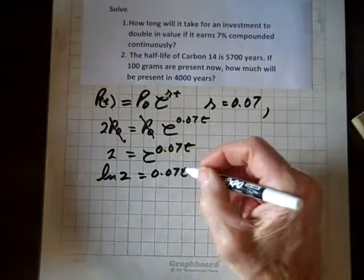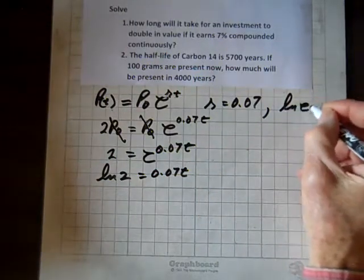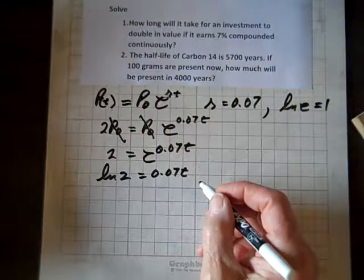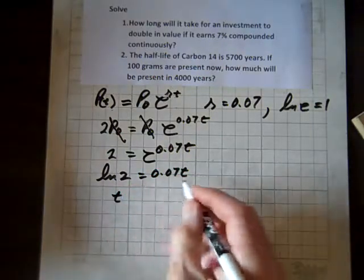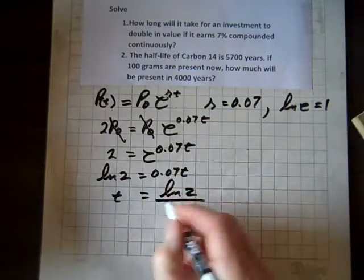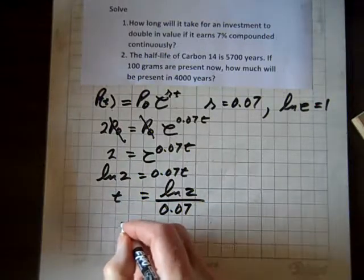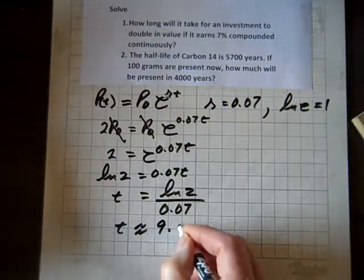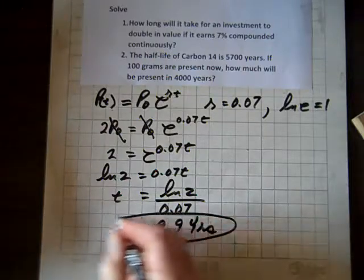And alongside ln of e. But we know that ln of e equals 1. And so 1 times 0.07t is 0.07t. Now our final task is to divide both sides by 0.07. And so that's what our time is. And when we run it through the calculator, we get approximately 9.9 years. And we're done with that one.